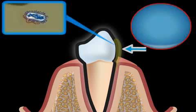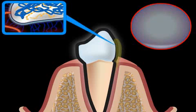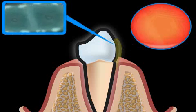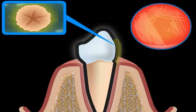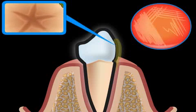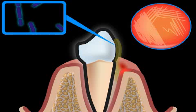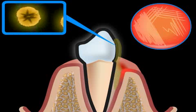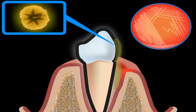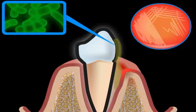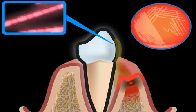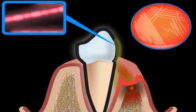Not only do plaque and bacteria initiate caries, but they also cause inflammation of the periodontal apparatus — in effect, the periodontium. First, inflammation of the gingiva and a gingival pocket develop. If plaque and bacteria are not effectively removed, then this inflammation leads to loss of bone, and bone pockets can develop as well.